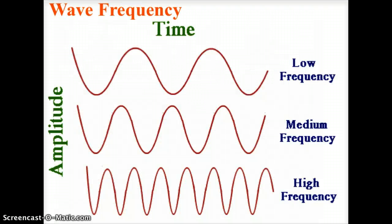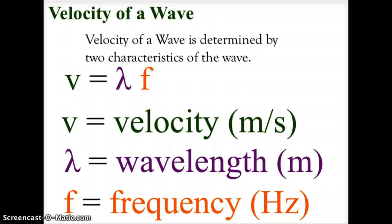A wave also has frequency — the rate at which the wave passes a certain point. A low-frequency wave means fewer waves pass in a given time period, while a high-frequency wave means more waves pass. AM and FM radio waves are low frequency with long wavelengths, while gamma rays and X-rays are high frequency with very short wavelengths — more waves striking a given point per unit of time.